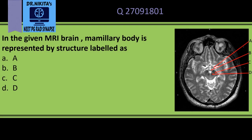In the given MRI brain, the mammillary body is represented by the structure labeled as — so this is an MRI brain. We know that this is MRI and not a CT scan because this bone here is black, so it is MRI.